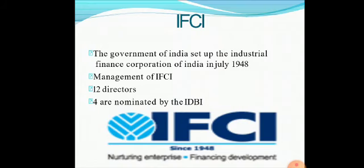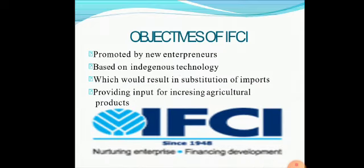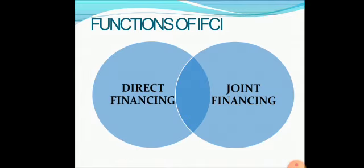The government of India set up the Industrial Finance Corporation of India, IFCI, in July 1948. Management of IFCI consists of 12 directors, of which four are nominated by the IDBI. Objectives of IFCI include promoting new entrepreneurs based on new indigenous technology, resulting in substitution of imports and providing input for increasing agricultural products. Functions of IFCI include direct financing and joint financing.